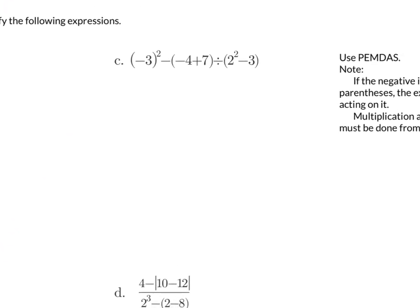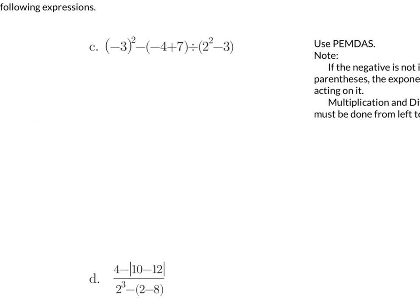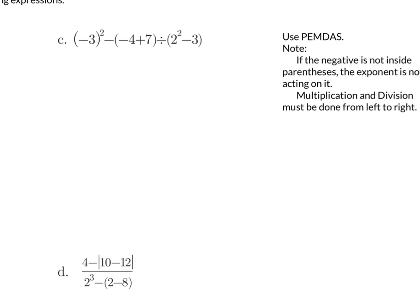Let's come up to example c. The first thing we want to do is simplify inside parentheses. Negative 3 cannot be simplified so it doesn't actually fall under this step. We can add negative 4 plus 7, which gives me 3. We want to divide: 2 squared is 4, minus 3 is 1.